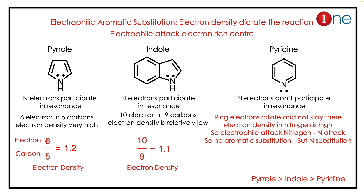Pyrrole has 6 electrons in 5 carbons; indole has 10 electrons in 9 carbons. If you look at the electron density, pyrrole is much denser than indole, so pyrrole reacts faster. Therefore, the electrophilic aromatic substitution order is: pyrrole > indole > pyridine.